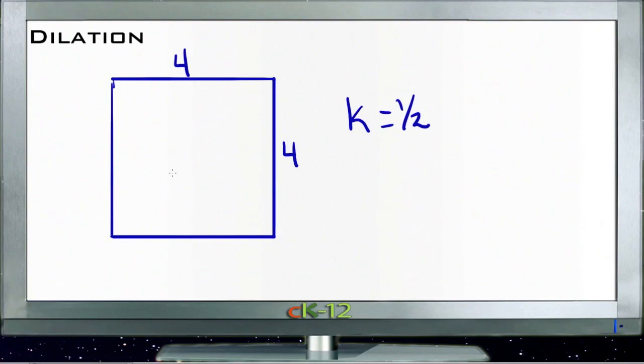Well, if this is four units in each direction and my center of dilation is the center of the square, then my new square would end up being positioned directly inside and its dimensions would be two by two. And if I were to label the sides of the original square, or let's label the vertices a, b, c, d, and then label the vertices of the new one...